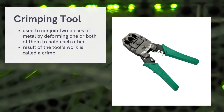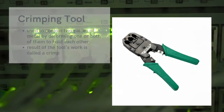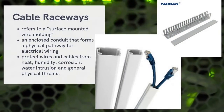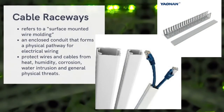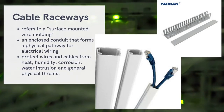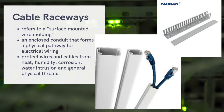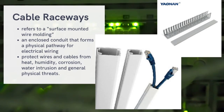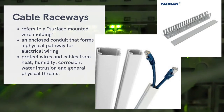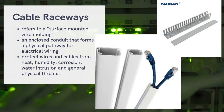We also have the cable raceways, also called surface mounted wire molding or simply wire molding. It simply organizes our wires so they look neat and clean, and the wires are kept out of sight. It is made up of plastic.